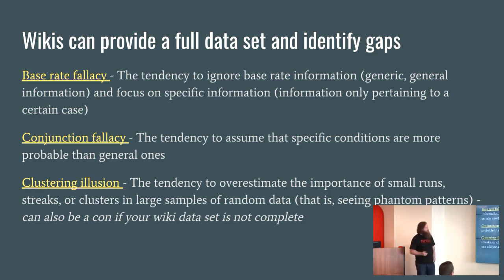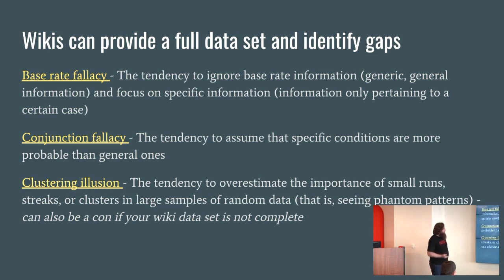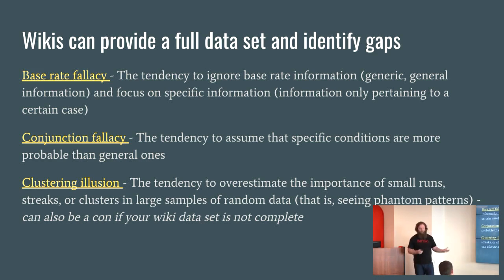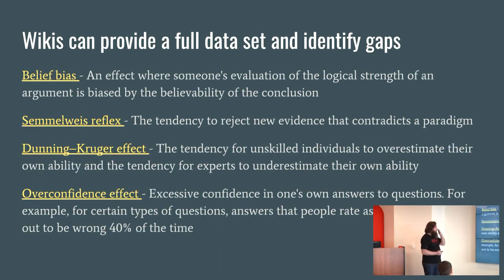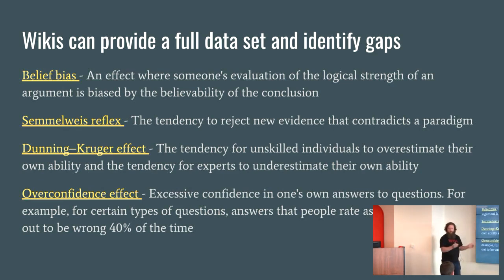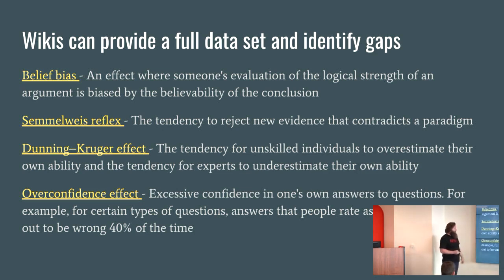So wikis can be good at avoiding anchoring because you can provide the whole set of data, but you can also build an anchoring effect into your wiki. You've got to watch out for how you implement things. There are other examples here where if you're looking at a subset of data instead of the whole set you might make a bad choice. You might also make a bad choice because you strongly believe in something and go with only the data that agrees with that versus all the facts.